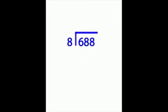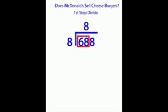Now that our problem is set up, let's think about our acronym, Does McDonald's Sell Cheese Burgers? Division is our first step. 6 cannot be divided by 8, but 68 can. 8 will go into 68 8 times. Put the 8 on top of the division bracket above the first 8 in 688.